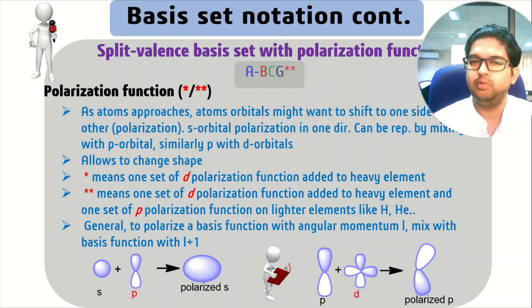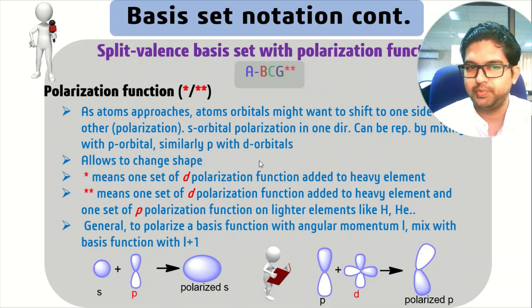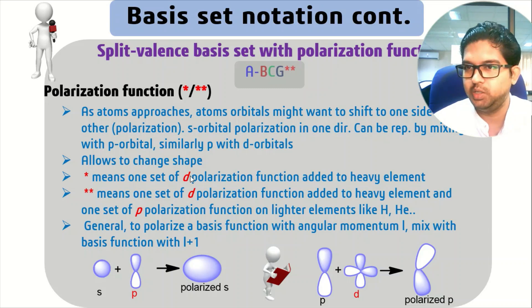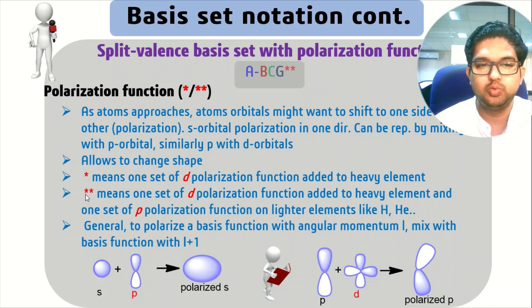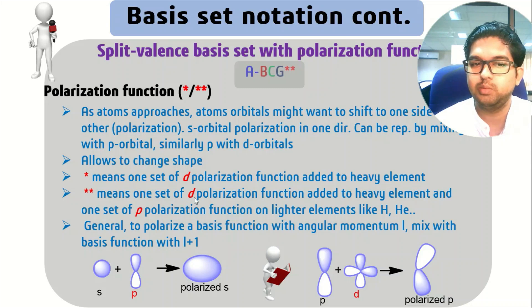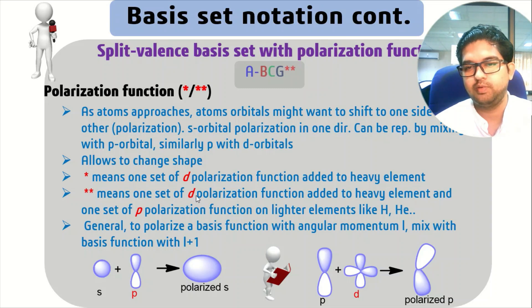Similarly, in the case of P orbital, we can diffuse D orbital into it. These allow the orbital to change shape. One star means one set of D polarization function added to the heavy elements. Two stars means D polarization added to the heavy elements plus P type polarization function added to lighter elements like hydrogen and helium.